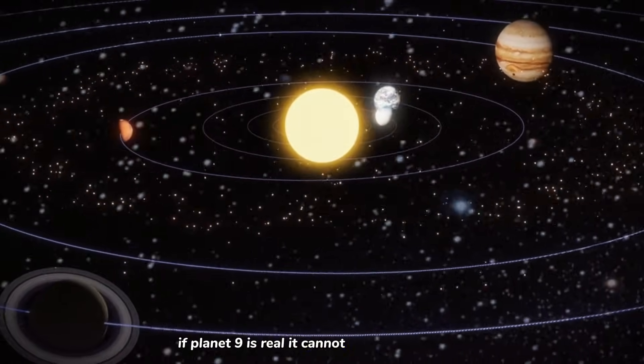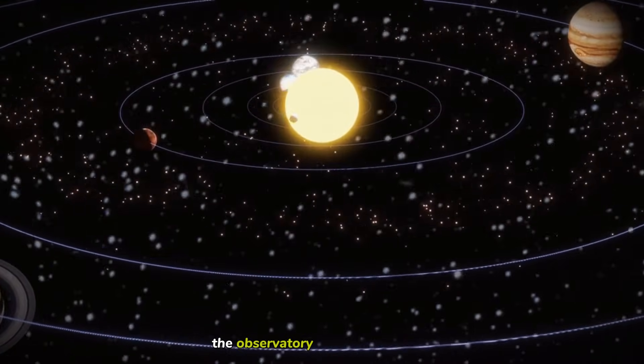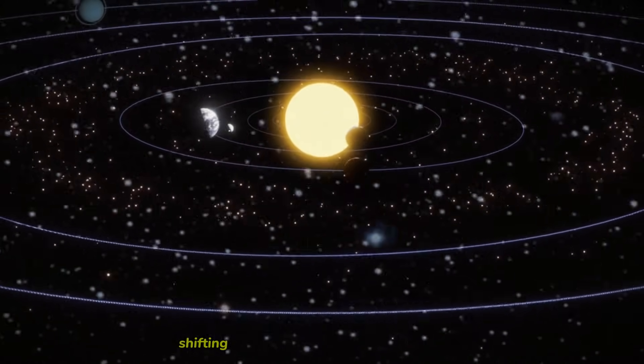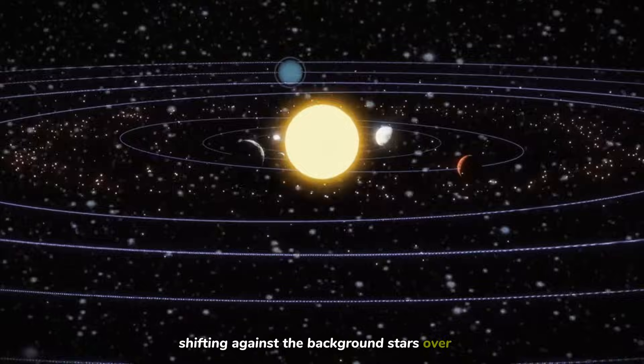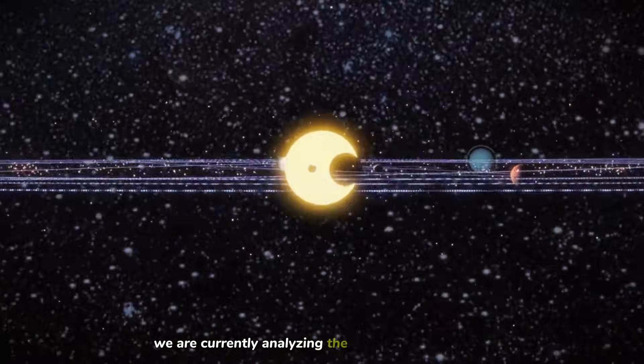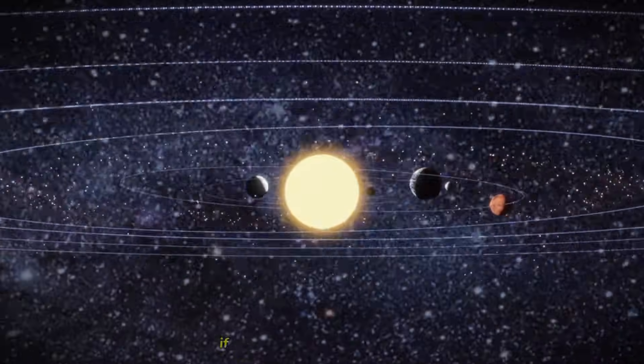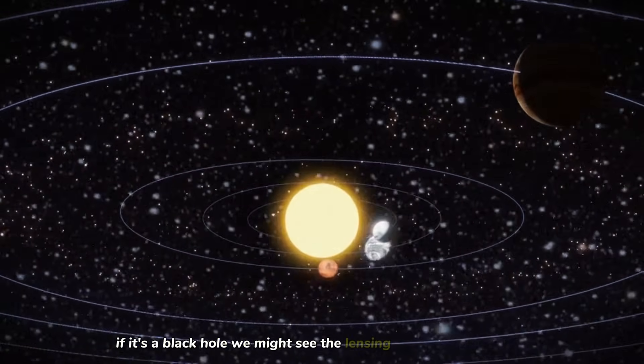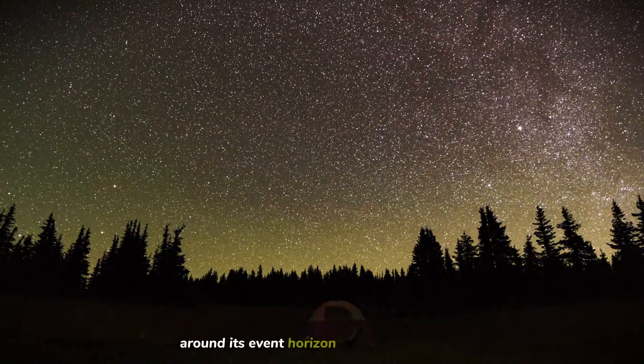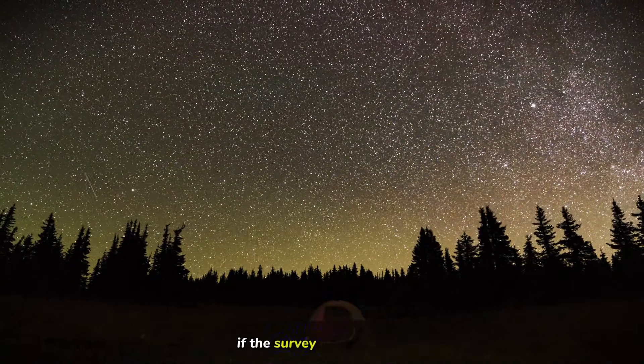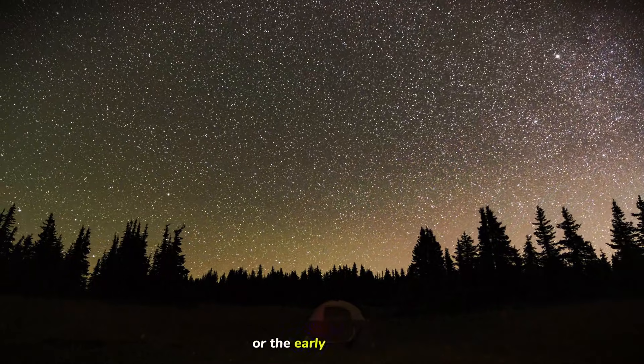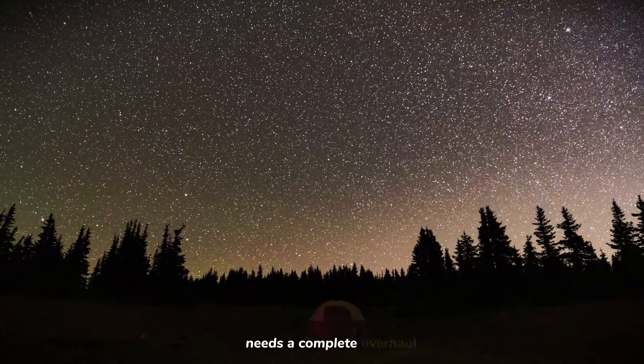If Planet Nine is real, it cannot hide from this survey. The observatory will capture the faint, slow movement of the planet shifting against the background stars over time. We are currently analyzing the first batches of this data. If the planet is there, we will spot it. If it's a black hole, we might see the lensing of background starlight around its event horizon. And if we find nothing, if the survey comes up empty, then we will know that our understanding of gravity or the early solar system needs a complete overhaul.